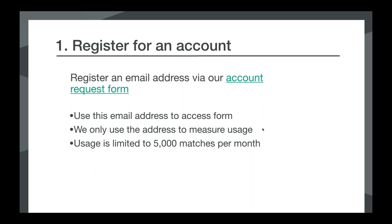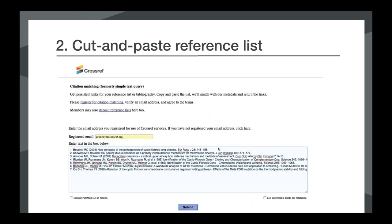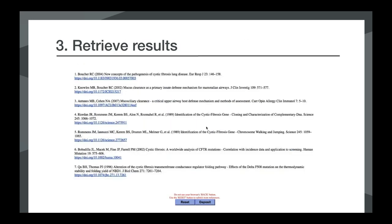If you do exceed 5,000 matches per month, you may need to use a different workflow. Once you're registered, you enter your email address into the form and cut and paste your reference list. The form is pretty forgiving — it can take numbered or unnumbered reference lists. If you have very badly formatted references, it very well may not be able to find a result. After you've entered your references, hit the submit button, and fairly quickly you'll get your reference list back with DOI links included that you can cut and paste back into your manuscripts. Note that not all items have DOIs, so not all references will be matched.